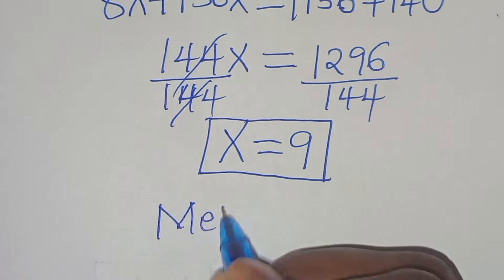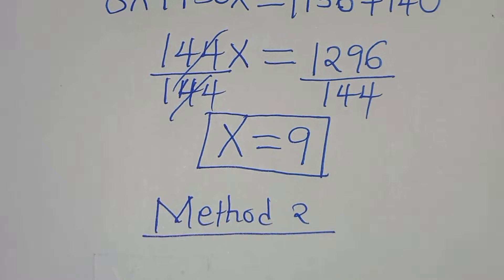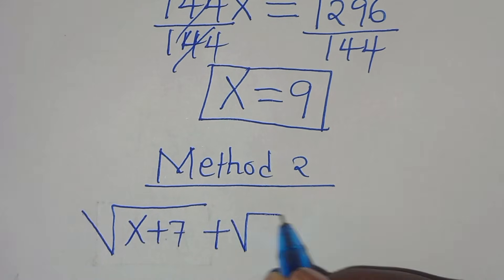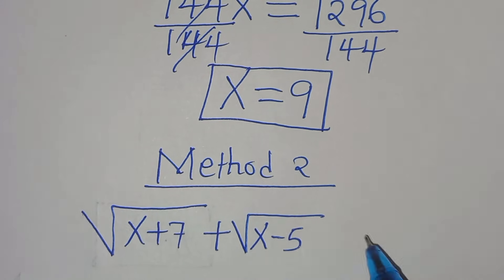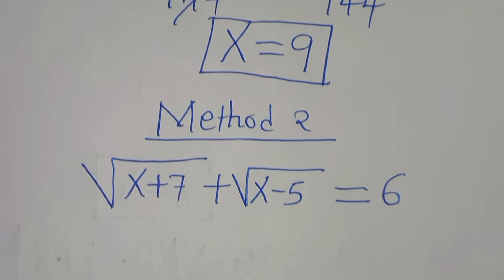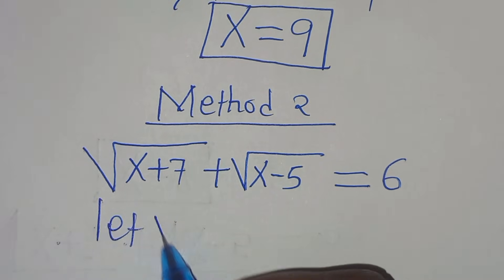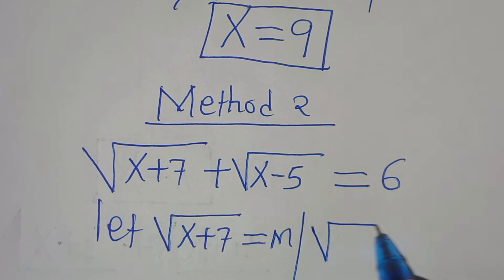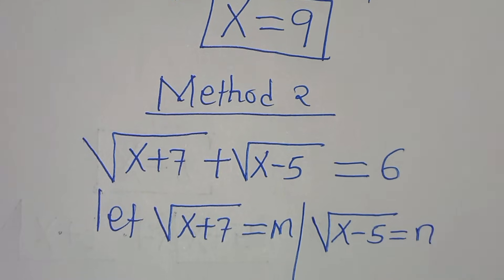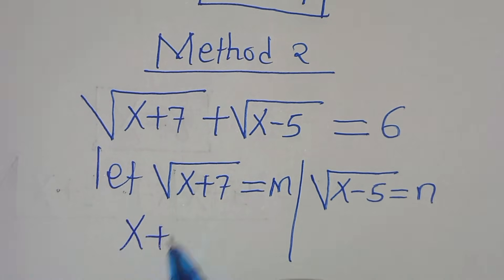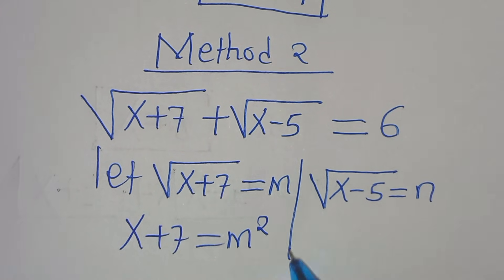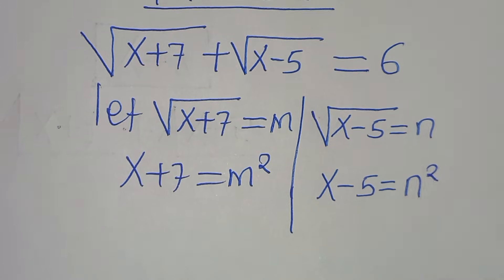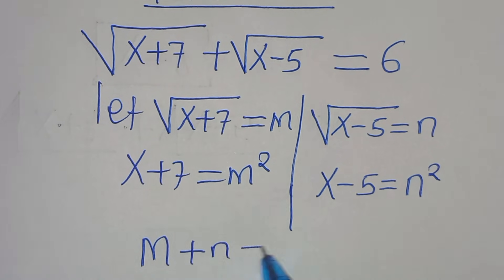In Method 2, we again have the square root of x plus 7, plus the square root of x minus 5, equal to 6. We let the square root of x plus 7 equal m, and the square root of x minus 5 equal n. So x plus 7 equals m squared, and x minus 5 equals n squared. This implies m plus n equals 6.